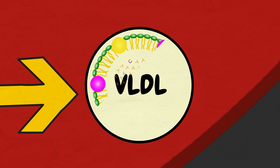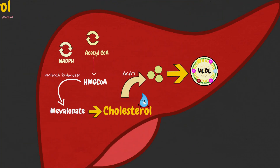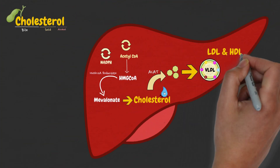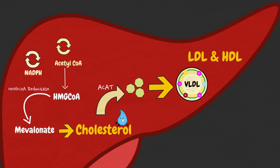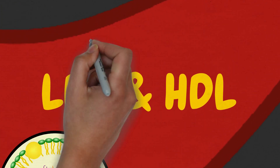Lipoproteins are made of fat and protein and serve as vehicles for cholesterol to travel through the blood. Other than VLDL, there are also LDLs and HDLs present within your body. LDL stands for low-density lipoproteins and HDL stands for high-density lipoproteins.